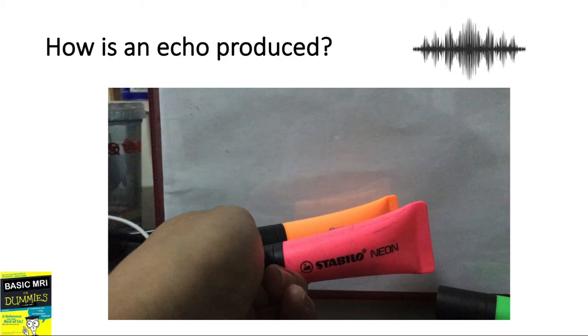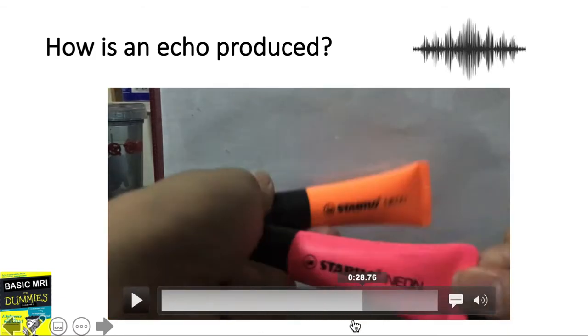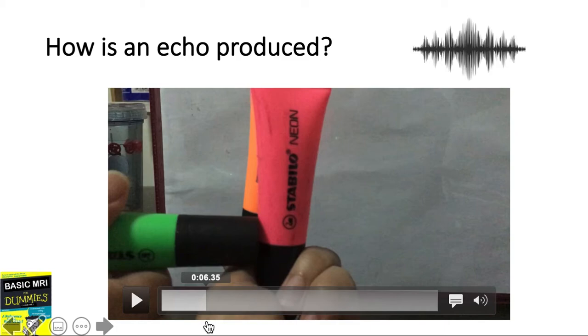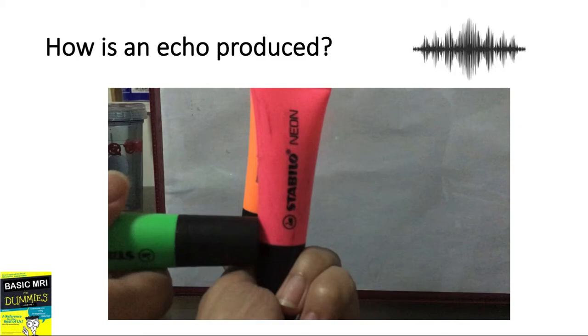Now the time between the excitatory pulse and when the echo is produced is called the TE or time to peak echo. The time in between the successive excitatory pulse, so recall that this is the excitatory pulse and another excitatory pulse, will be called TR or repetition time.